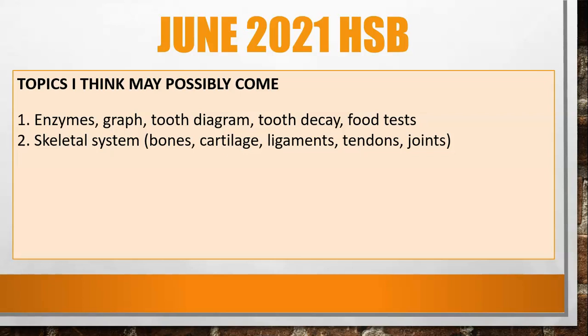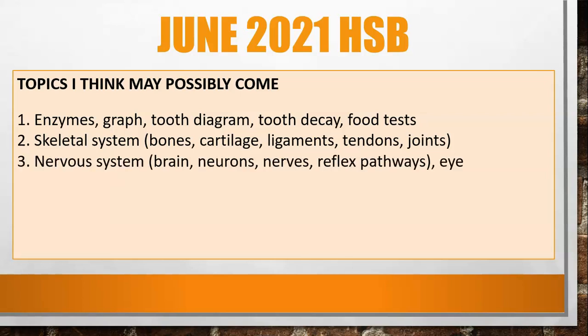I'm also predicting the nervous system — something on the brain, neurons, the structure of neurons, nerves, and reflex pathways. And then possibly the eye, because the eye is a popular topic that tends to come regularly.